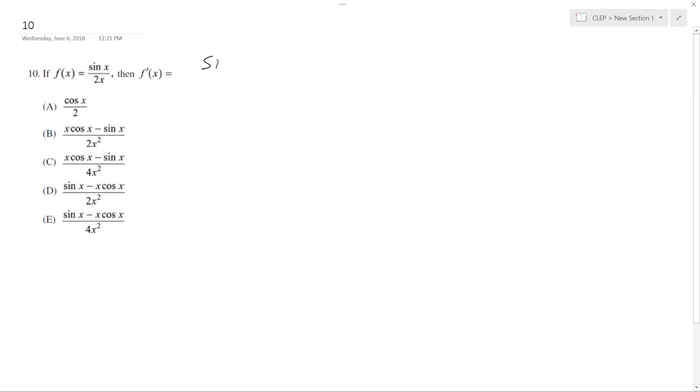So in this instance we're going to take sine of x prime times the denominator 2x, minus sine of x times the derivative of 2x,